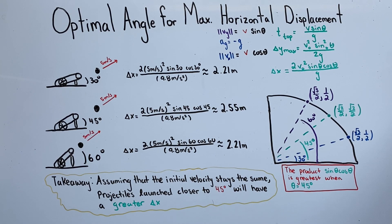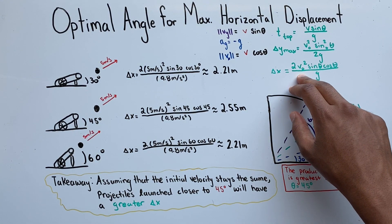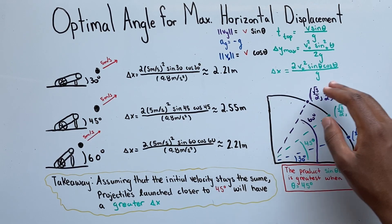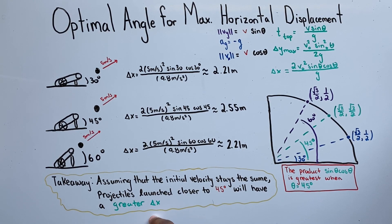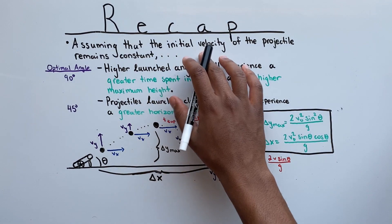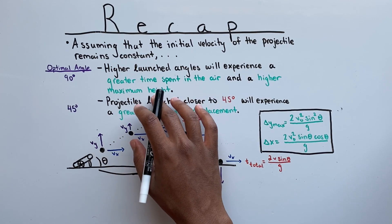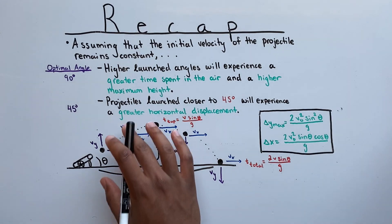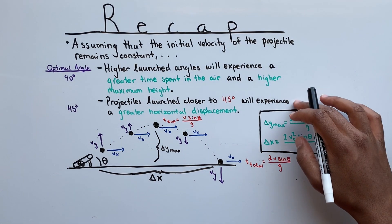Assuming initial velocity stays the same, projectiles launched at 45 degrees will experience maximum horizontal displacement. The reason is that horizontal displacement depends on the product sine theta times cosine theta, and looking at the unit circle, this product is greatest when the angle is 45 degrees. To recap: projectiles launched at a higher angle experience greater time in the air and a higher maximum height, while projectiles launched closer to 45 degrees experience greater horizontal displacement. The optimal angle for maximum height is 90 degrees, and for maximum horizontal displacement it is 45 degrees.